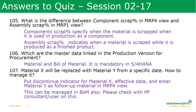Material X has to be replaced with material Y from a specific date — how to manage it? We need to put the discontinue indicator in material X in MRP4 view, and then put material Y as the follow-up material, also filling in the specific date as the effective date. This can also be managed in the bill of material if the change is happening only in the bill of material. For that, you can discuss with the PP consultant or the PP user.